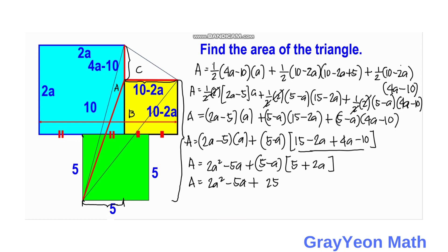Expanding (5 − a)(5 + 2a) using FOIL: first terms give 25, outer terms give +10a, inner terms give −5a, last terms give −2a². So we have 2a² − 5a + 25 + 10a − 5a − 2a². The 2a² terms cancel (positive and negative), and the 10a − 5a − 5a = 0 also cancels, leaving Area = 25 square units. That is our answer.